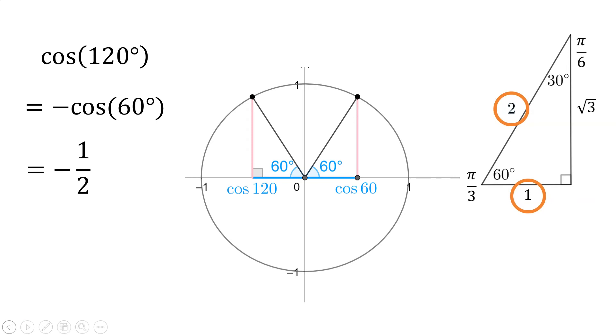And actually for any angle in the second quadrant, any obtuse angle, the cosine is always going to be negative. The sine will be positive, but the cosine would be negative.